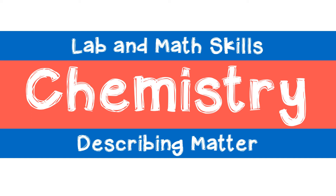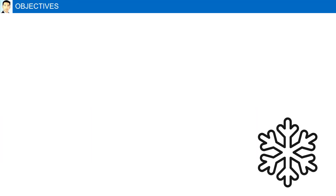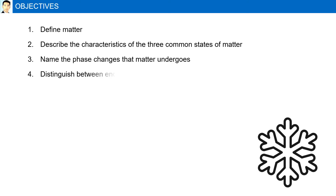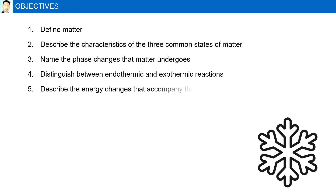Describing Matter. Objectives: Define matter. Describe the characteristics of the three common states of matter. Name the phase changes that matter undergoes. Distinguish between endothermic and exothermic reactions. And finally, describe the energy changes that accompany the phase changes matter undergoes.